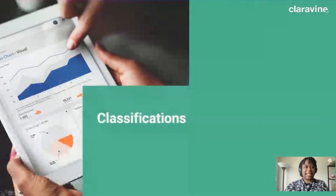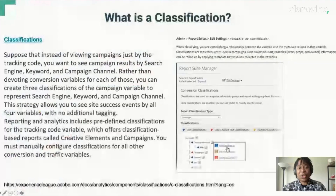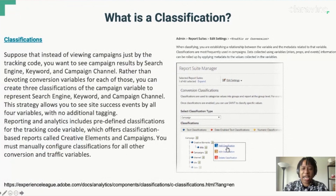And that concludes the segment portion of this presentation. Now we are going to move on to classifications. A classification is a way of categorizing analytics variable data, then displaying that data in different ways when you generate reports. When classifying, you are establishing a relationship between the variable and the metadata related to that variable.